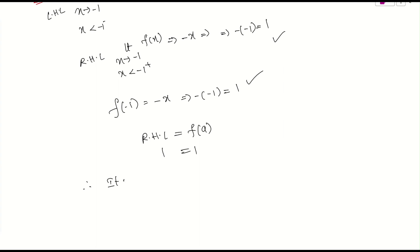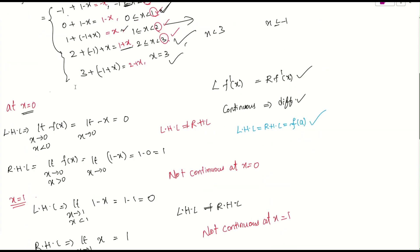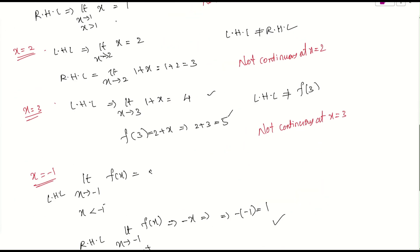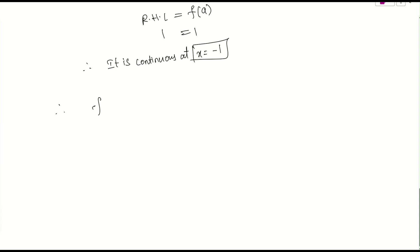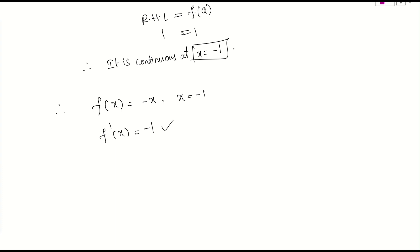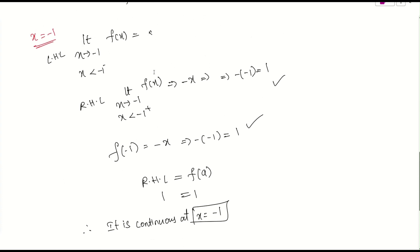Since the function is continuous at x = -1, and f(x) = -x there, we have f'(x) = -1, which means the function is differentiable at x = -1. At all other breakpoints (0, 1, 2, 3), the function is discontinuous and therefore not differentiable. So the set of points where f(x) is not differentiable is {0, 1, 2, 3}.